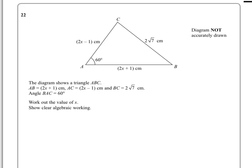In question 22 we're given the diagram of a triangle ABC. We're given the lengths of AB, AC, BC and one of the angles. We're asked to work out the value of x.